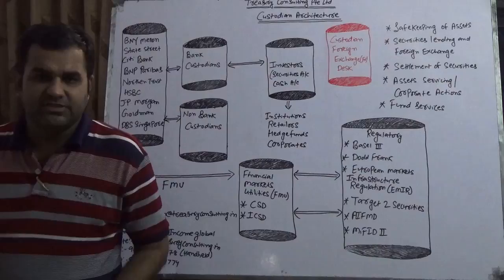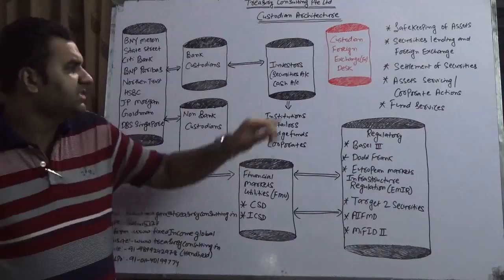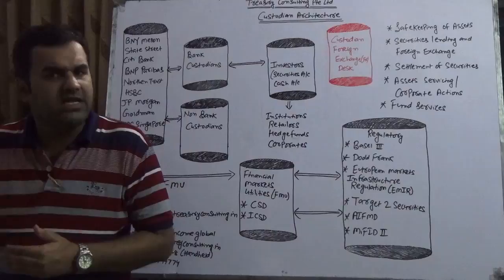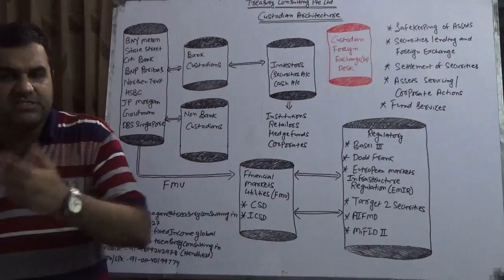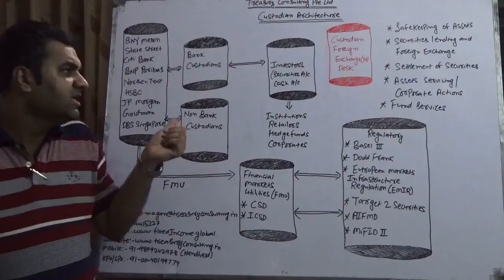Custodians are divided into two parts: bank custody and non-bank custody. Generally, custodians offer two kinds of services: security accounts and cash accounts. When it comes to technical services, they offer investment advisory and investment management. In layman's terms, they offer security accounts and cash accounts. What exactly does a custodian do?